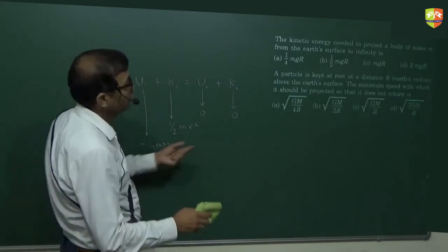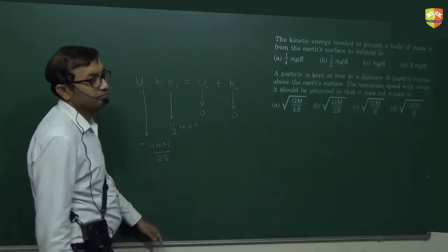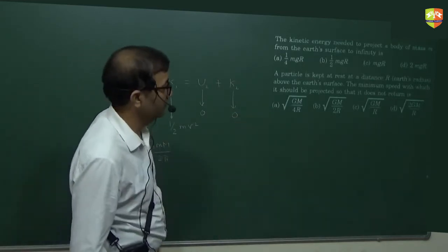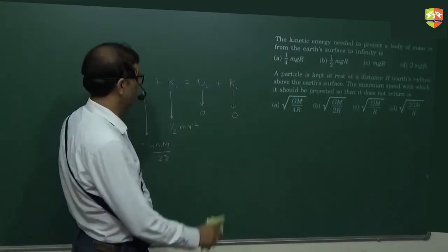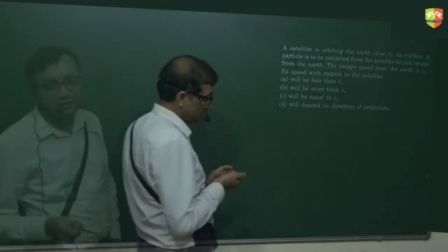So, root GM by R. Earlier it was root 2GM by R. The last objective question. After that, subjective will start. No sorry, it will be same on A.